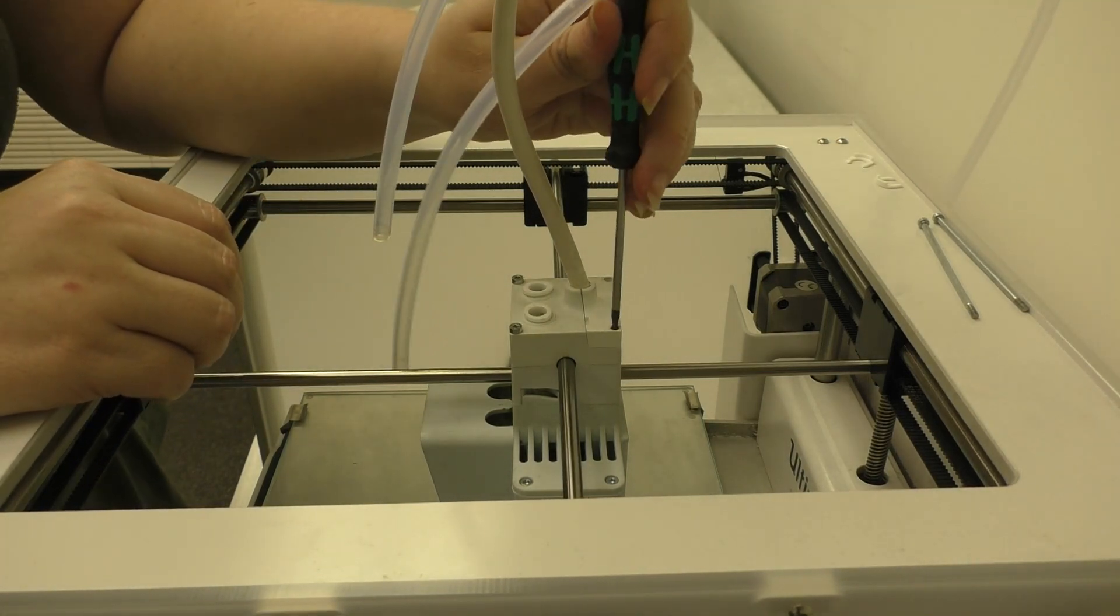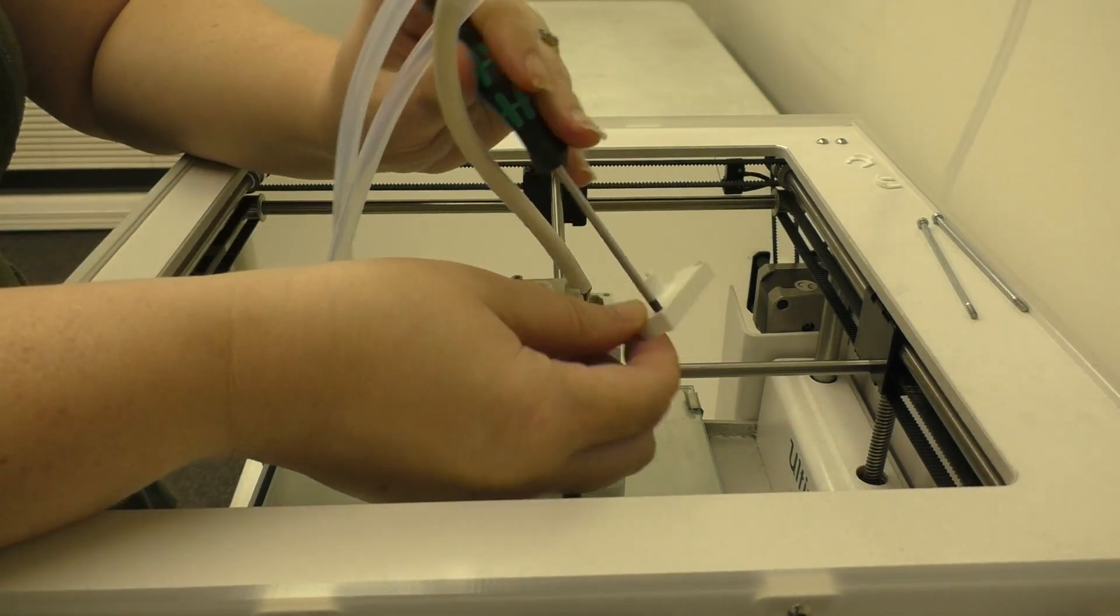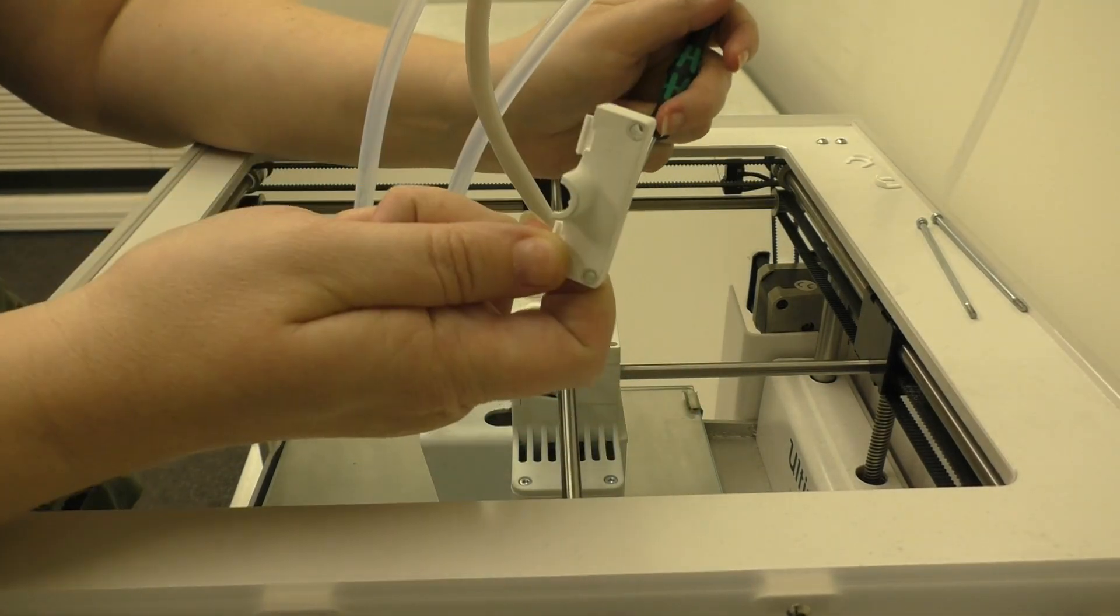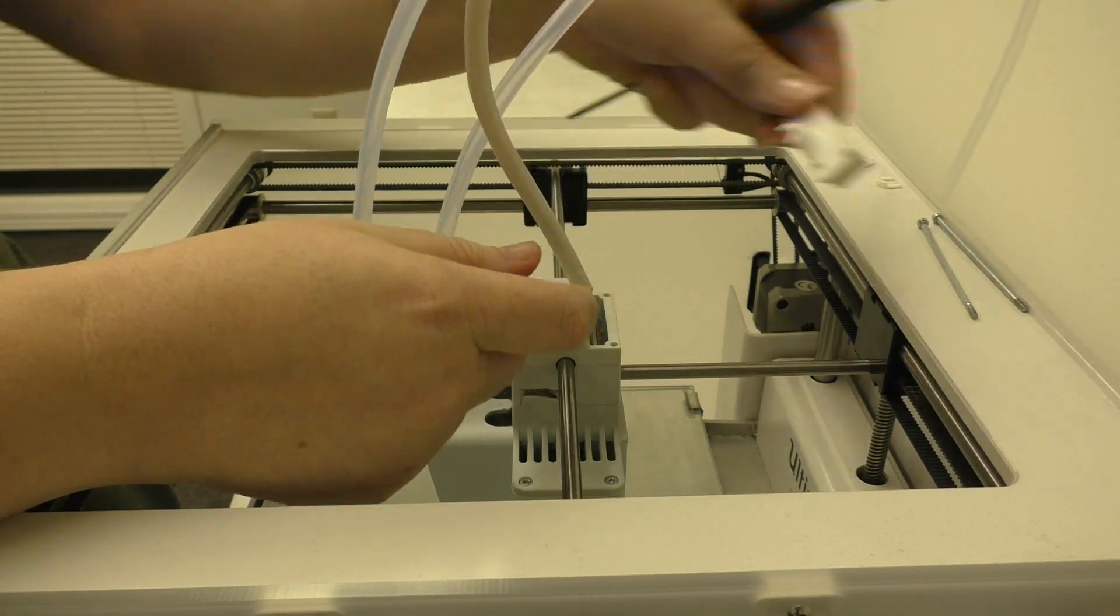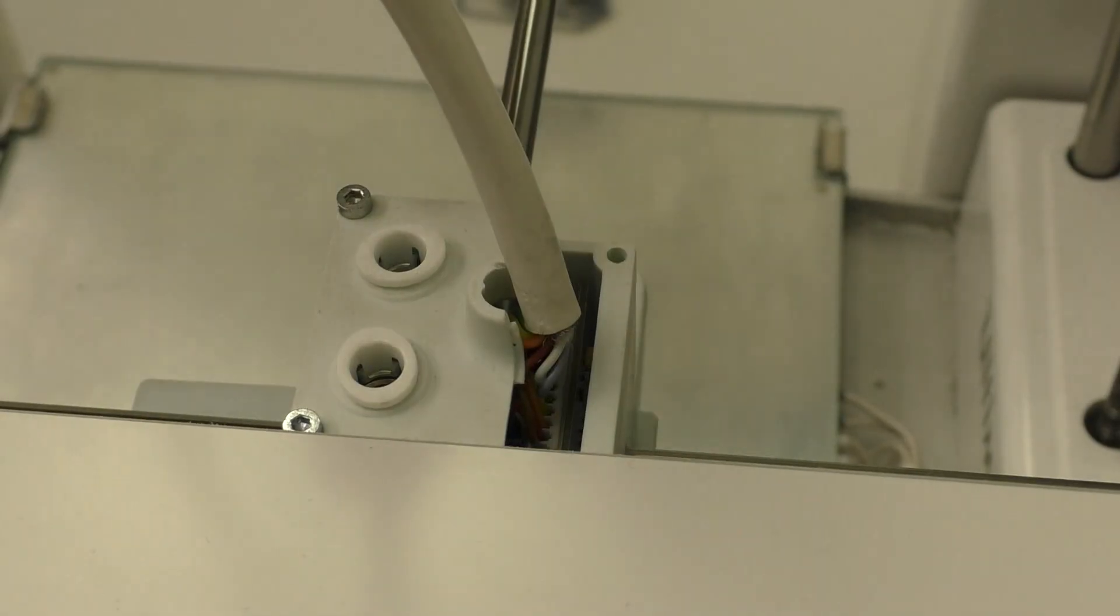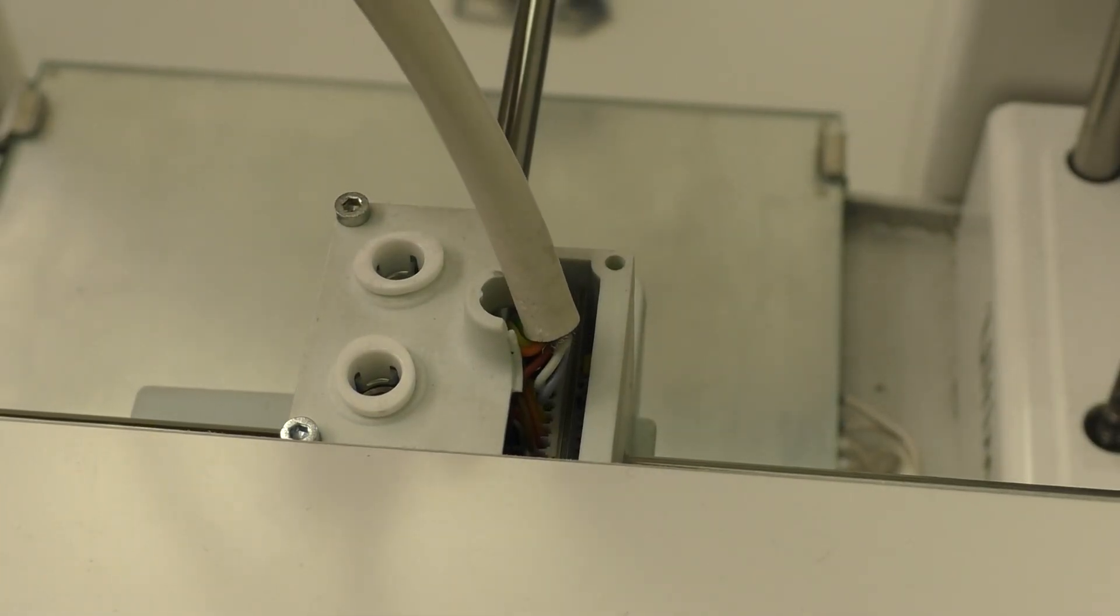Next, we'll go ahead and take the screwdriver and stick it in the hole at the back of the print head. This will let you remove that cover. I've moved the print head to the side to make this a little easier to see.